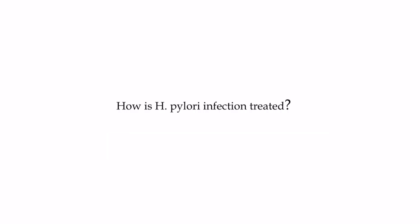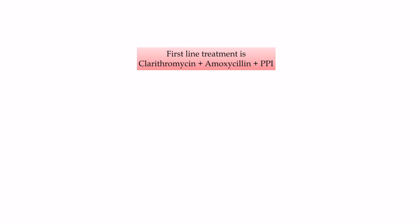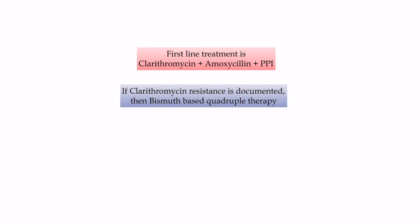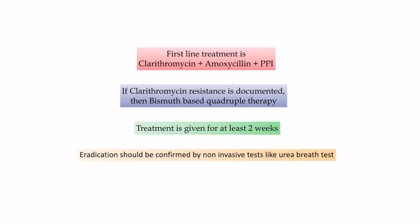How is H. pylori infection treated? First-line treatment is clarithromycin plus amoxicillin plus a proton pump inhibitor. If clarithromycin resistance is documented, then bismuth-based quadruple therapy is given. Treatment is given for at least 2 weeks. Eradication should be confirmed by non-invasive tests like the urea breath test.